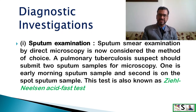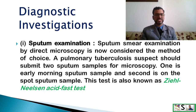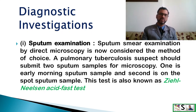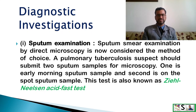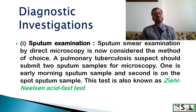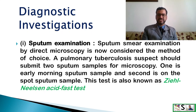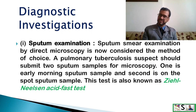There are certain diagnostic investigations for TB. The first and main investigation is sputum examination. Sputum smear examination by direct microscopy can reveal the presence of bacteria and is considered the method of choice. A pulmonary tuberculosis suspect should submit two sputum samples for microscopy: one early morning sputum sample and one on-the-spot sputum sample. The test is also known as the ZN acid-fast test.